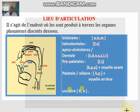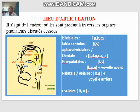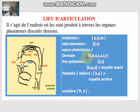Now for the lieu d'articulation, look at the diagram here. We have different forms: bilabial, labiodental, apico-alvéolaire or dental, pré-palatal, palatal, and vélaire. These are the main places of articulation, and each sound belongs to one of these categories.